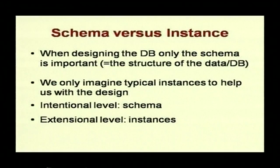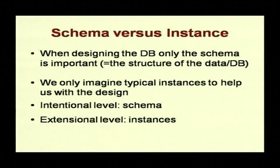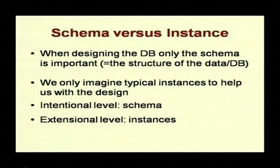The relational database instance is the set of tuples currently in the database. When designing the database, only the schema is important — the structure — and we imagine certain instances to verify that the design is correct. Another terminology used is: intentional level refers to the schema, and extension level refers to the instances, what is currently in the database. The rows of a relation, other than the header row containing attribute names, are called tuples.